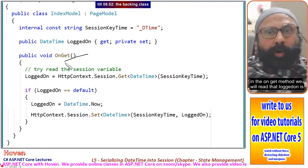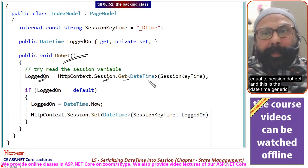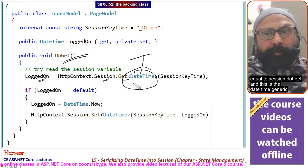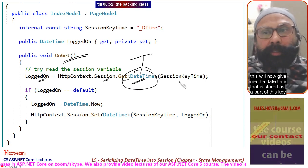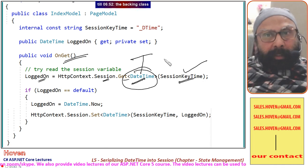In the OnGet method, we will read that LoggedOn equals session.Get, and this is the DateTime generic. This will now give me the DateTime that is stored as a part of this key.